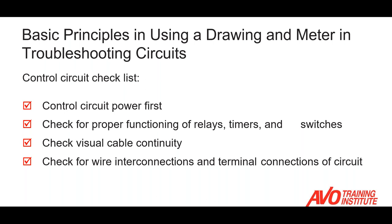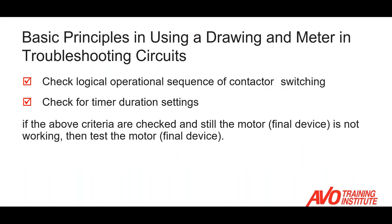When we're looking at the control circuit, we first check the control circuit power — do we have available potential? We want to check our devices: relays, timers, and switches, and make sure they function properly. Check cable and wire continuity, and also check our wire interconnections and terminations. We need to check the logical operation sequence of the contactor switching, and verify the duration settings of any timers to make sure they're set correctly. If we check all the above criteria and the motor is still not working, then we test the motor — that's the final check we do.